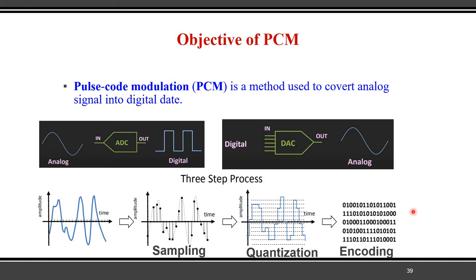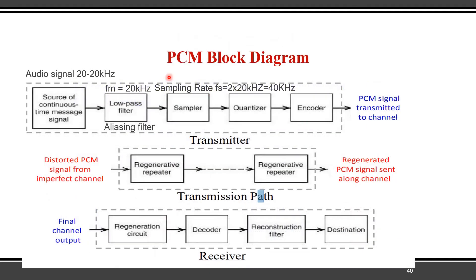This digital signal is what we transmit over long distances using different digital modulation techniques. At the receiver side the input is digital, and the final output is again converted back to analog signal, because as human beings we are able to understand only analog signals, not digital. This is the entire block diagram of pulse code modulation, which consists of a transmitter, transmission path, and receiver. On the transmitter side the source is a continuous time message signal — that is called the information source.